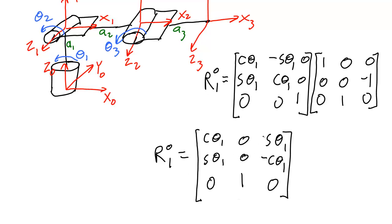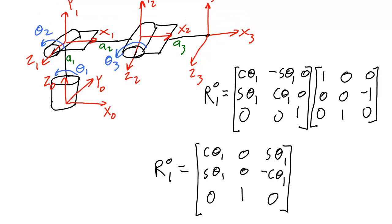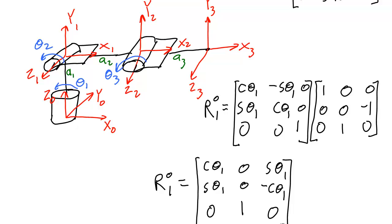The last step is to multiply these two matrices together. This is my final rotation matrix that expresses the rotation from frame zero to frame one. Notice that the actual numbers that make up this matrix will change based upon the angle of your first servo or joint. I'm going to set this rotation matrix aside and find the rotation matrix from frame one to frame two.